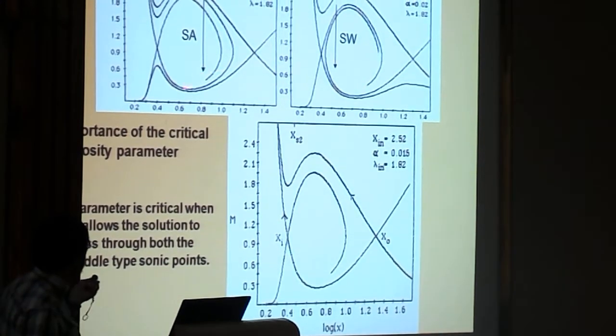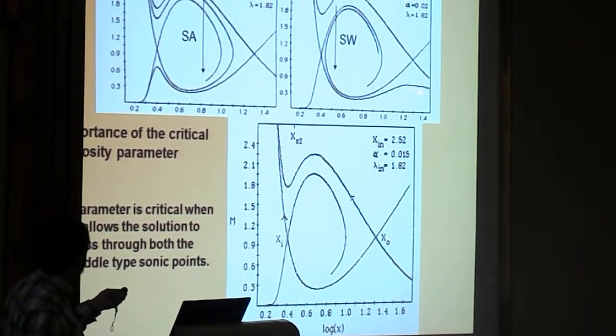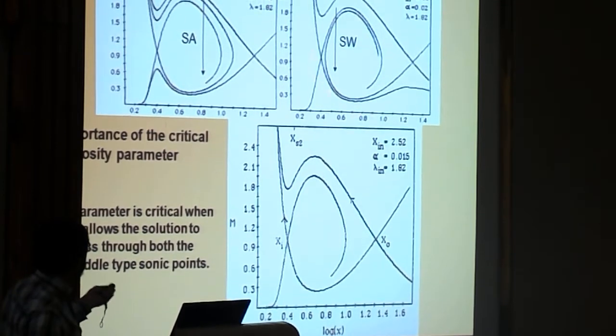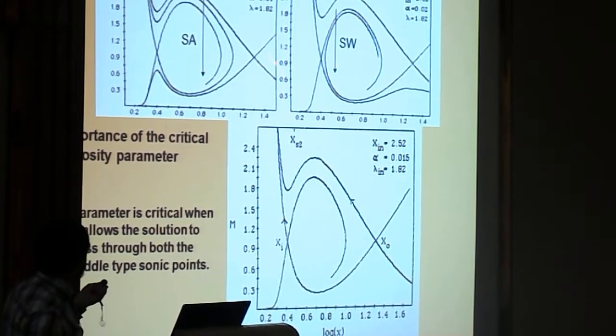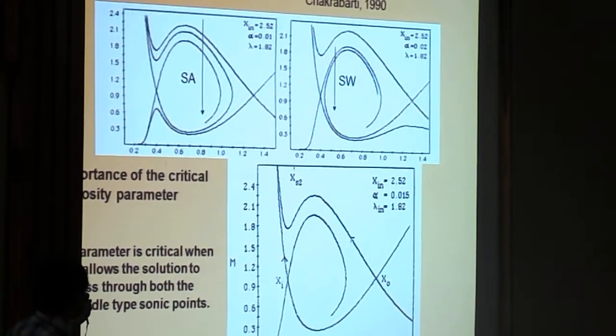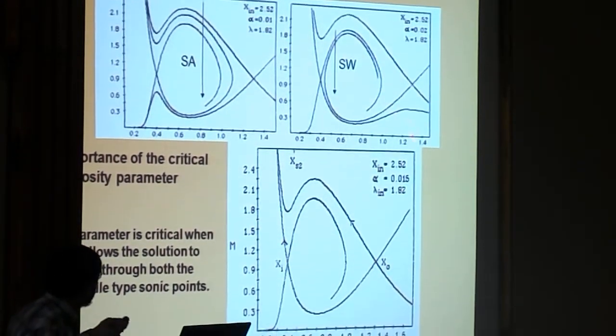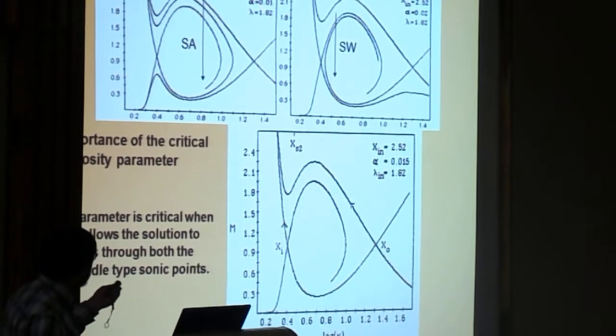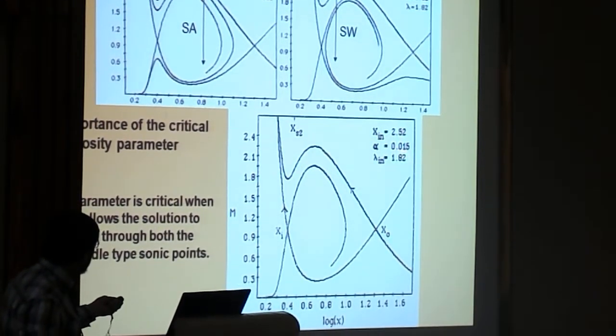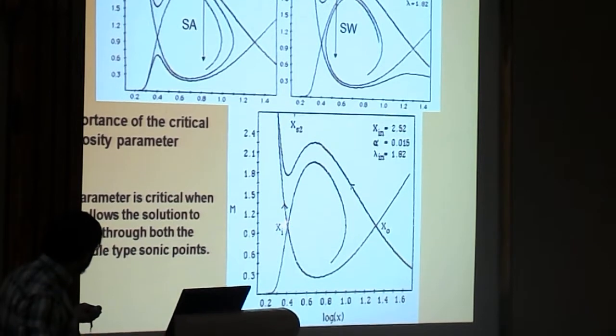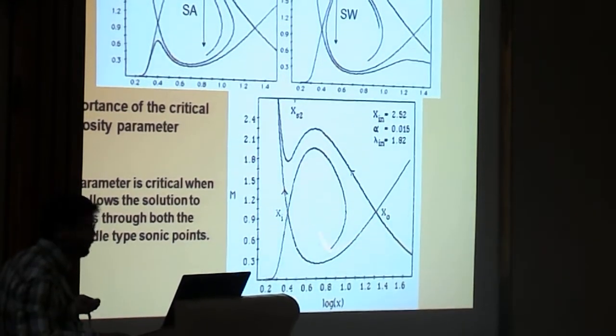You can, you may not be able to see the difference, at first glance, but you can see that the topology, in this case, the lower branch has opened up. And, in this case, higher branch is only open, and going inside. So, these two topologies are different, and the angular momentum, the alpha is different, 0.0 and 0.02. In between, topology is such that, the same solution goes to both the sonic points.